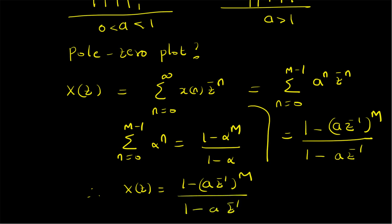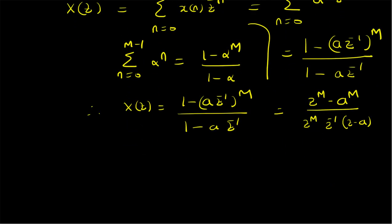In order to find the poles and zeros, we have to rewrite this rational z-transform as follows: it can be rewritten as (z^M - a^M) divided by z^M · z^(-1), multiplied by (z - a). That is, we take z^(-M) common in the numerator and z^(-1) common in the denominator. We can now find the zeros as solutions of the equation z^M - a^M = 0.